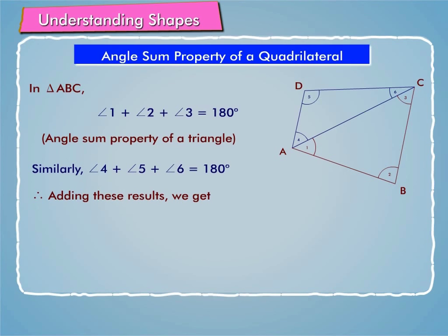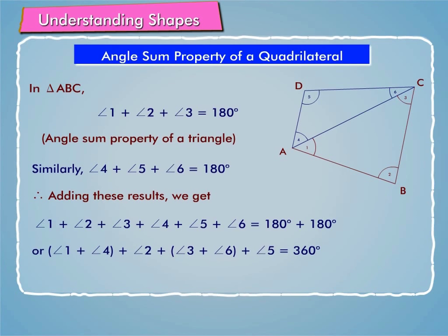Now adding these results, we get angle 1 plus angle 2 plus angle 3 plus angle 4 plus angle 5 plus angle 6 is equal to 180 degrees plus 180 degrees. On regrouping, we get angle 1 plus angle 4 plus angle 2 plus angle 3 plus angle 5 is equal to 360 degrees, which is the same as angle A plus angle B plus angle C plus angle D is equal to 360 degrees.